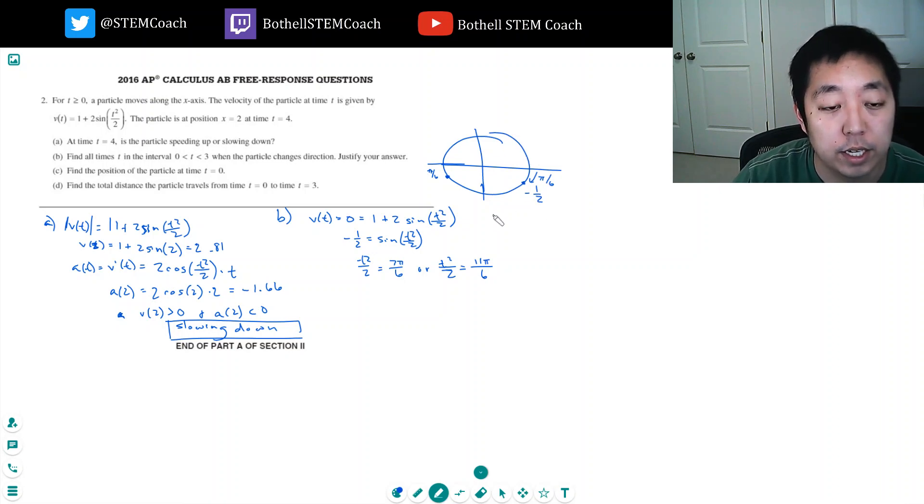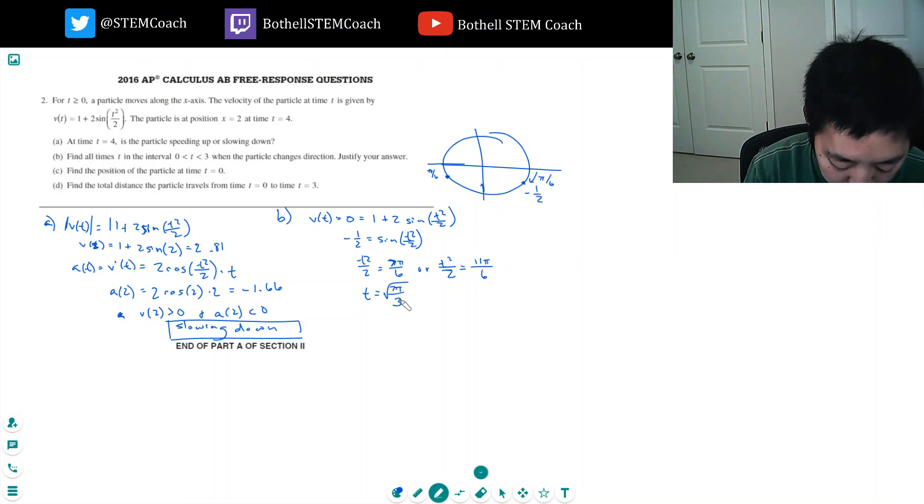Make sure I got that right. Yes, I got that right. So if I solve for t with this case, I multiply by 2, so it's the square root of 7 pi over 3. And let's see what that is. 7 pi divided by 3, square root of that. t is equal to 2.7.